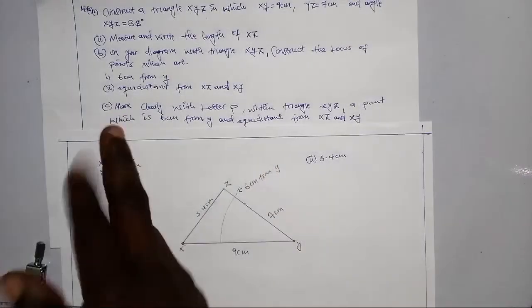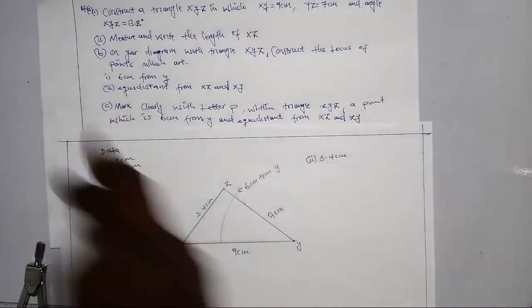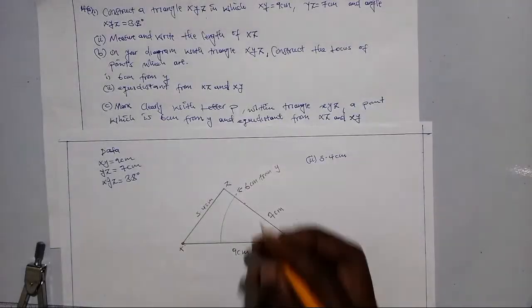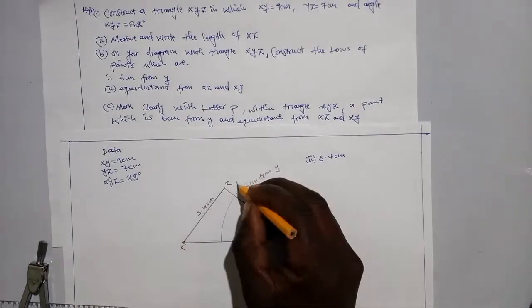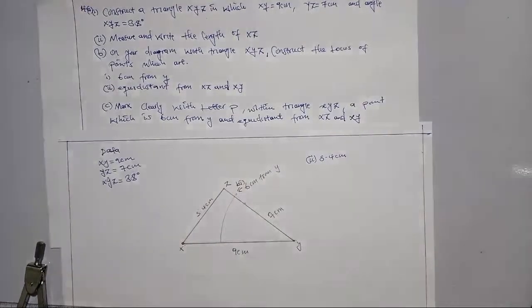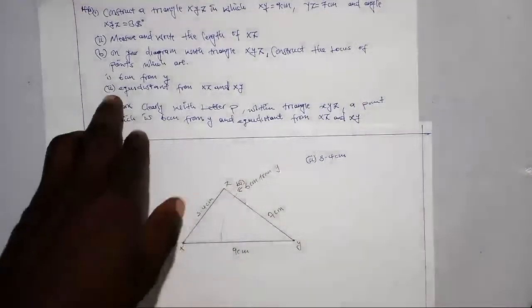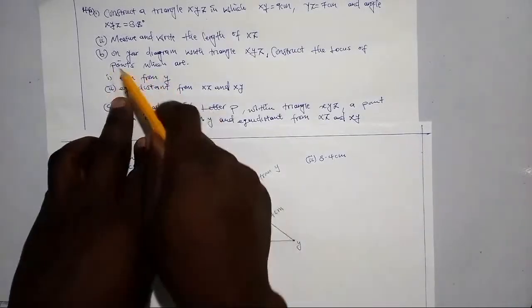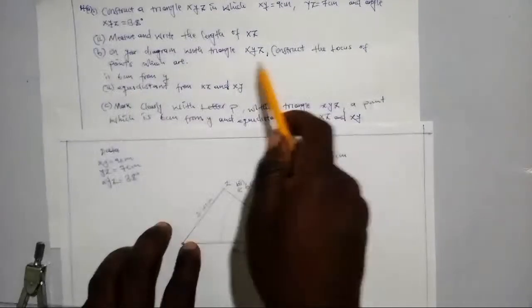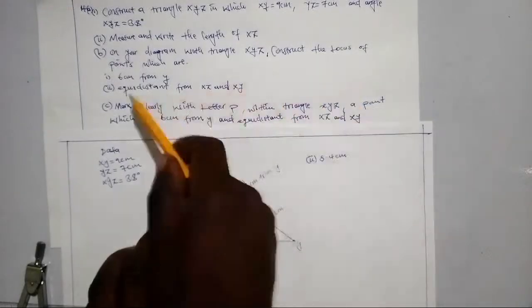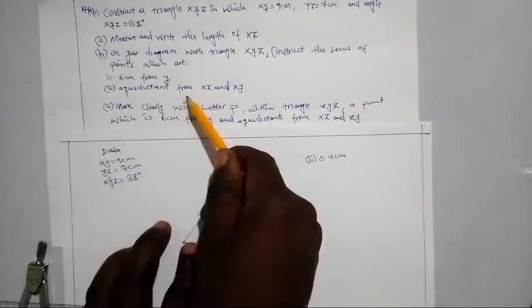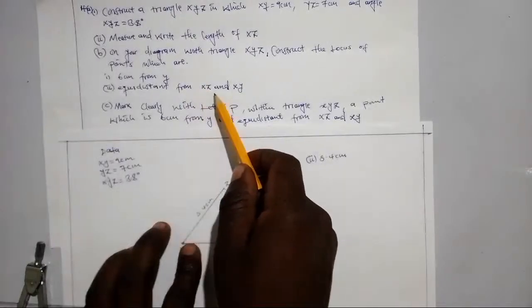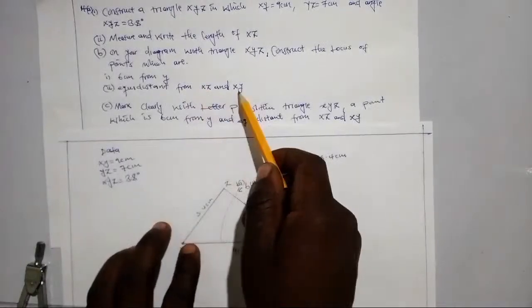Part (b1) is done. Now let's move to part (b2): construct the locus of points which are equidistant from XZ and XY within triangle XYZ.